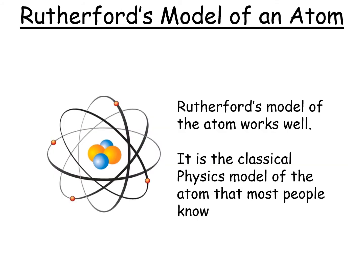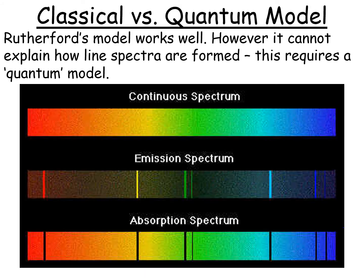Rutherford's model works very well — it's what we teach in early years and is called the classical model of the atom. However, the structure of the atom is not that simple, and to describe it correctly you actually need quantum mechanics. Rutherford's model couldn't explain everything we observe — in particular, it can't explain how line spectra are formed. To fully explain this, we require a quantum model, which we'll look at in more detail in the next lessons.